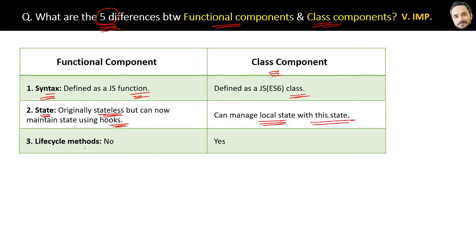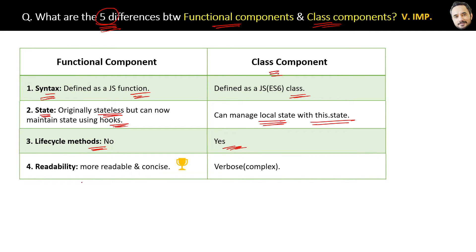The third difference is that functional components do not have lifecycle methods, whereas class components do have lifecycle methods. The fourth difference is about readability: functional components are more readable, concise, and simple, whereas class components can be more verbose or complex.